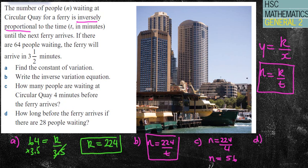Part D asks how long before the ferry arrives if there are 28 people waiting. So 28 equals 224 over t. I can times by t and divide by 28 to get t equals 224 divided by 28, which equals 8 minutes. And I've answered my question.